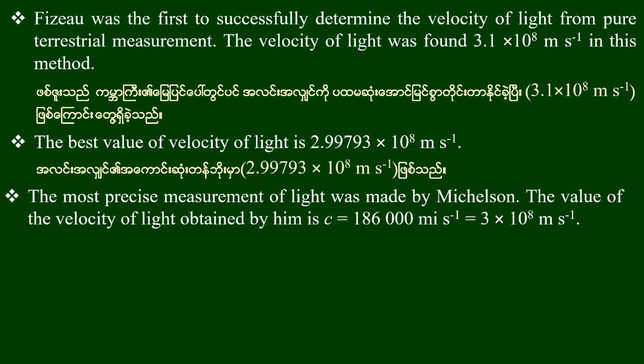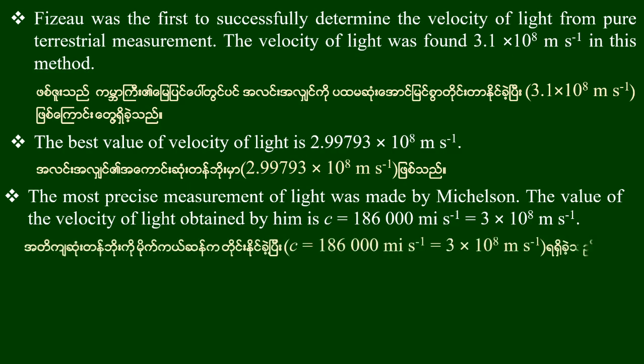The value of the velocity of light is C is equal to 186,000 miles per second, or 3 times 10 to the power 8 meters per second.